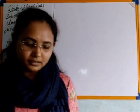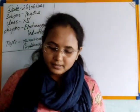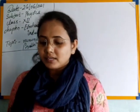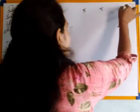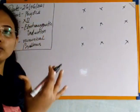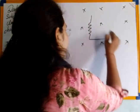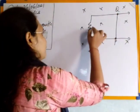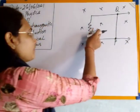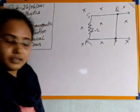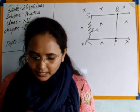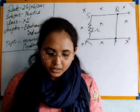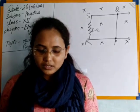Now the second question, again from the motional EMF topic. A 0.5-meter long metal rod PQ completes the circuit as shown in the figure. In the figure, a uniform magnetic field perpendicular to the plane in the outward direction is given. A loop is given in this field and PQ is the movable arm. The resistance of the circuit is 3 ohms, the magnetic flux density is 0.5 Tesla.